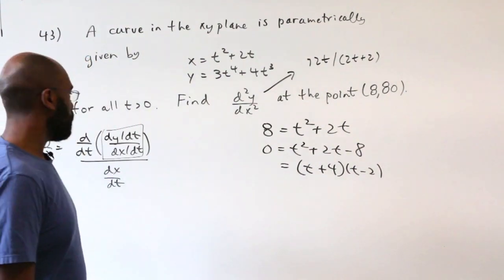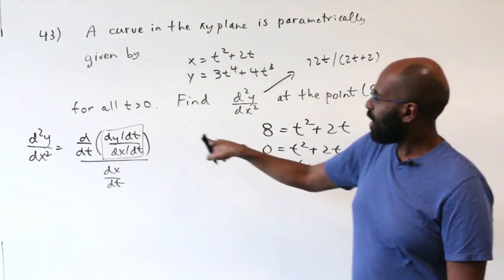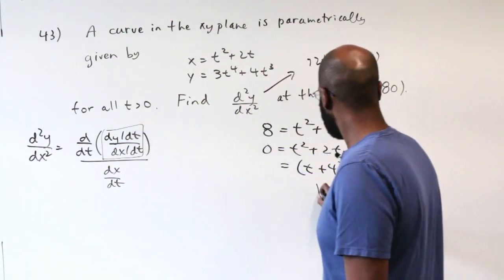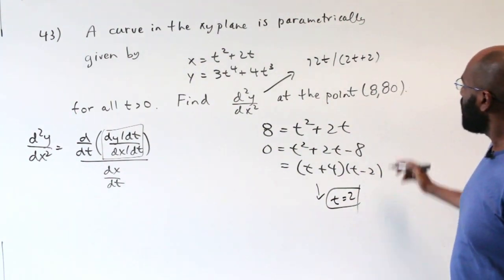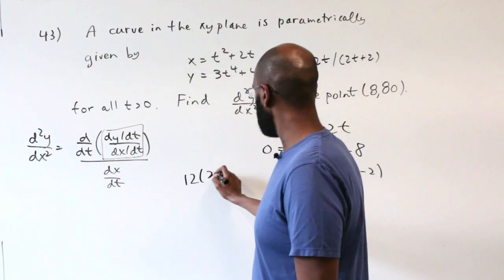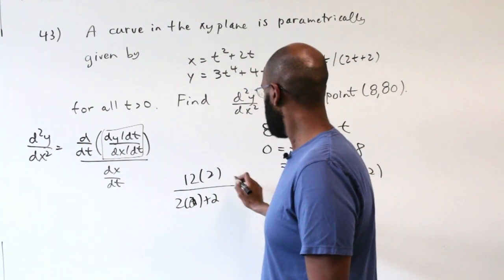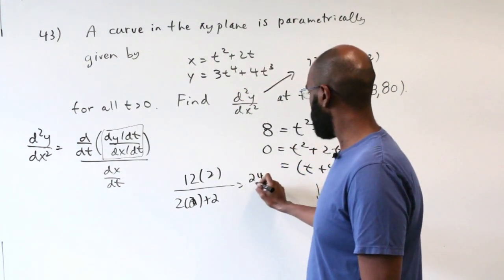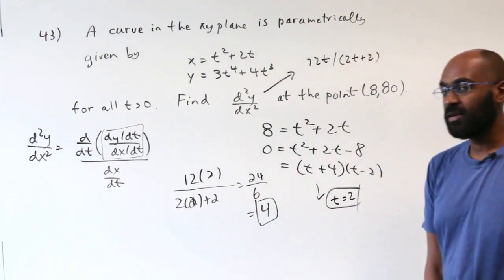And if we do that and plug it into our second derivative, we get 12 times 2 divided by 2 times 2 plus 2, which is 24 divided by 6, giving us a second derivative of 4.